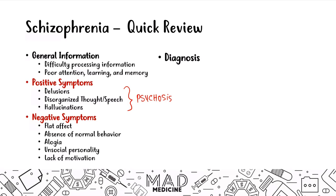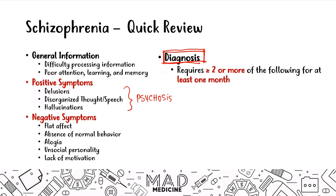When it comes to diagnosis, this is very important because the diagnostic criteria will help you differentiate between schizophrenia and the three main types of schizophrenic disorders. Memorize the diagnostic criteria — I can't stress it enough. Schizophrenia is diagnosed by having two or more of the following for at least one month.